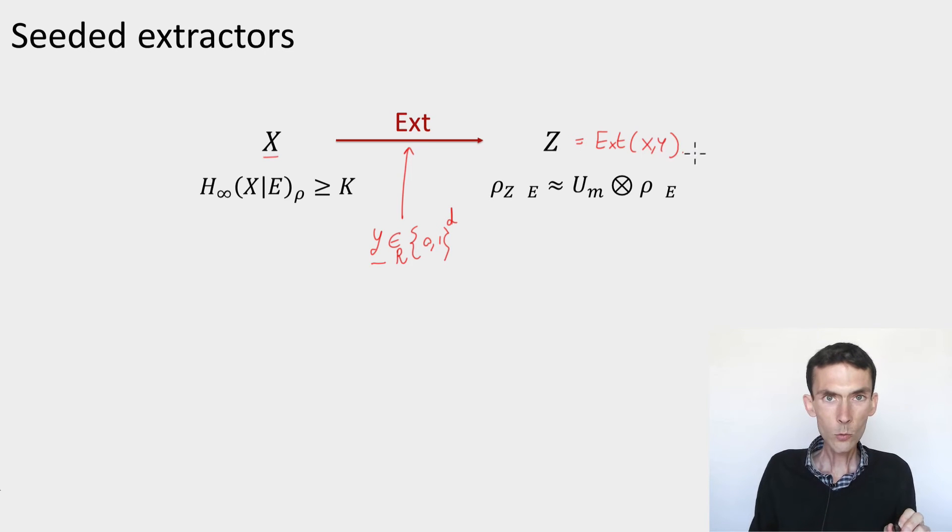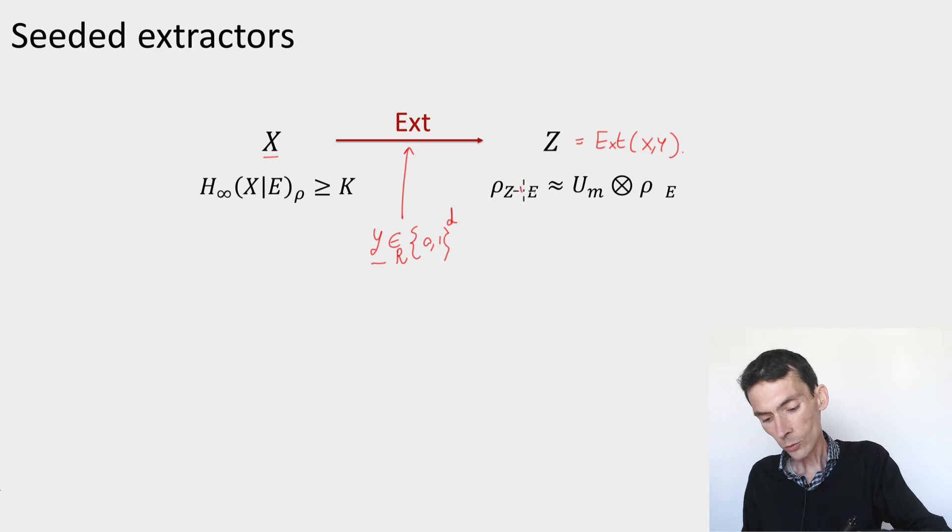And now the condition will be that not only should the output be uniform from the point of view of the eavesdropper, but it should also appear uniform from the point of view of an eavesdropper who holds the initial side information E, and also is given access to the seed Y. So we'll put a Y here to represent this seed.